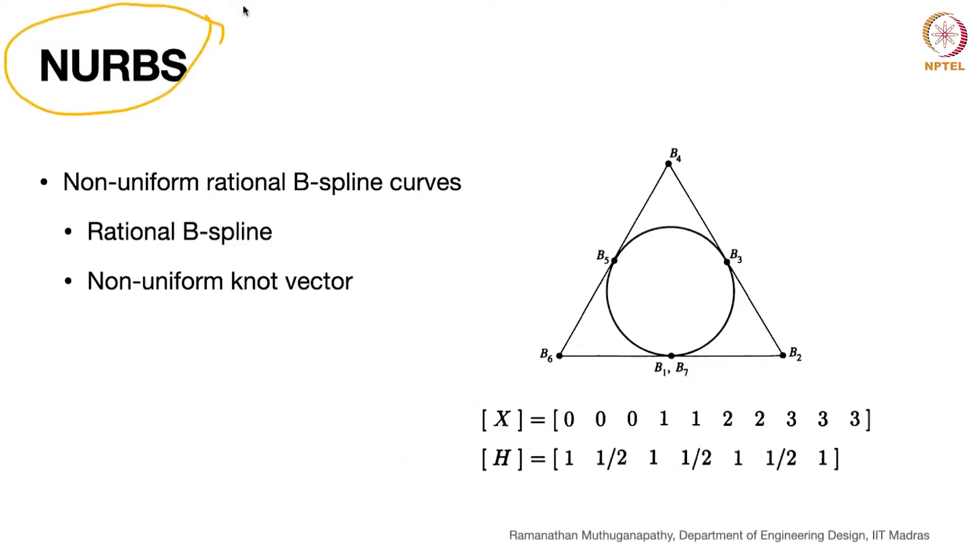This is the topic of non-uniform rational B-splines. This is the topmost or superset of everything. All the Bezier curves that we saw, or B-spline curves we saw, is a subset of what is called non-uniform rational B-splines.